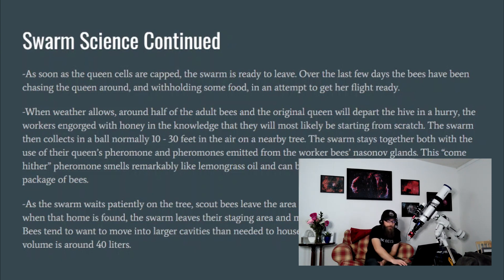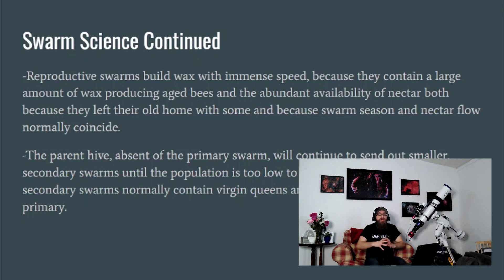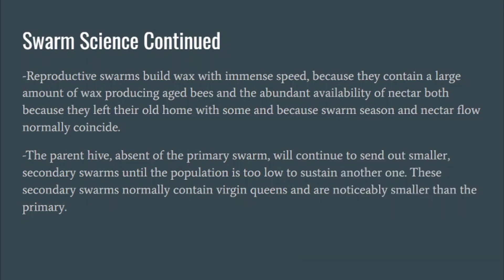As the swarm waits on the tree, scouts go out looking for suitable home locations. The optimal cavity size on swarm trap plans is around 40 liters — generally bigger than we'd think for housing a swarm, because they know they'll need to build up before the end of the year. Reproductive swarms build wax with immense speed because they came engorged with carbohydrates and honey, and they left with a ton of house bees and wax-age bees. If you catch a reproductive swarm, give them mostly blank foundation — they'll draw it out in a jiffy.